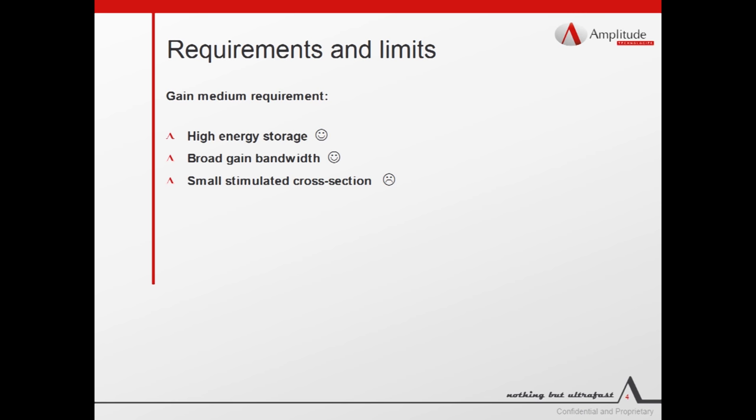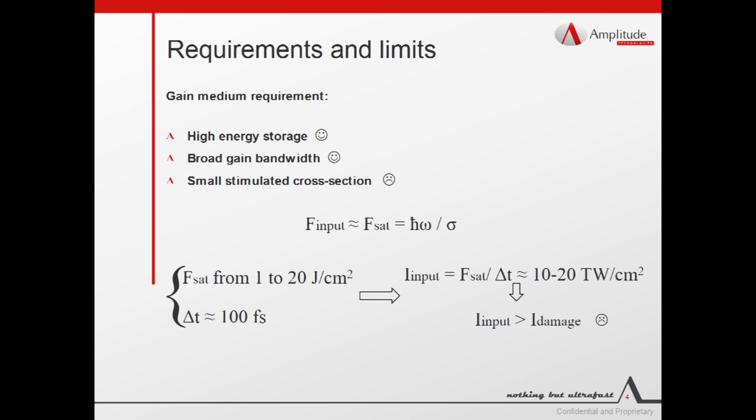This affects the amplification efficiency since high energy extraction occurs only when the input laser fluence is of the order of the saturation fluence. As we can see from the formula, low cross-section implies high saturation fluence. For solid materials, this fluence is around 1 to 20 joules per centimeter square. If we want to efficiently amplify a short pulse, let's say 100 femtosecond, the corresponding intensity on the crystal would be of the order of 10 to 200 terawatt per centimeter square. This value is well above the damage threshold of the material.